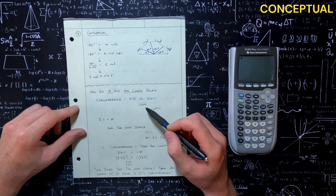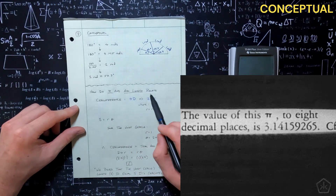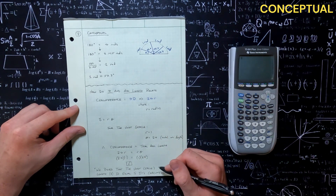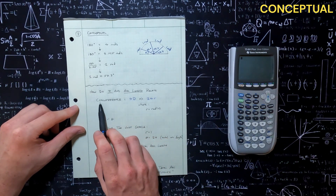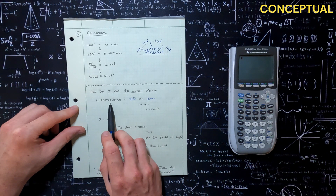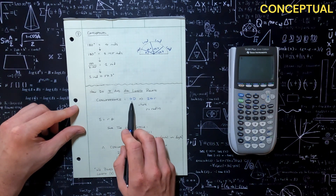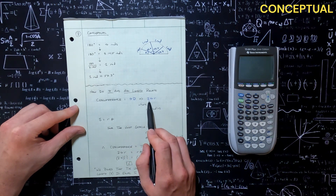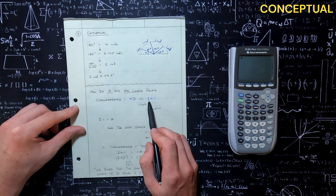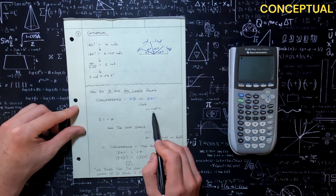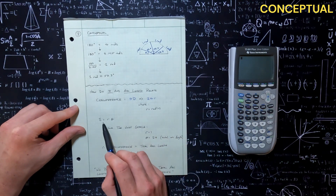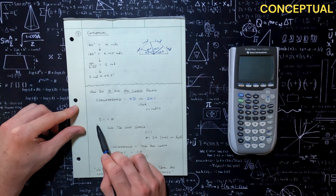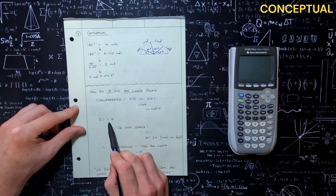Let's move down here to another concept: how do pi and arc length relate? I want to go through a quick proof. We all know the circumference of a circle — that equals pi·d. But we can rewrite that, because we know diameter is just 2 times the radius. So we can rewrite this as 2πr, where r equals the radius.